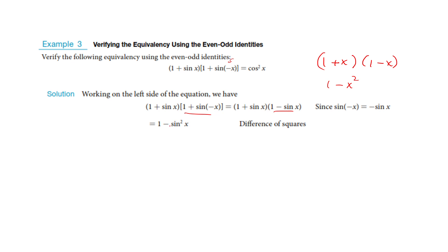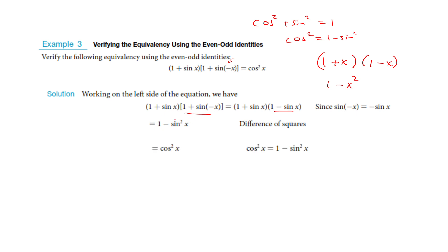Now, 1 minus sine squared — we know something about that. We know from the Pythagorean identity that sine squared plus cosine squared equals 1, so another way of saying 1 minus sine squared is that it equals cosine squared. So we can turn this into cosine squared.